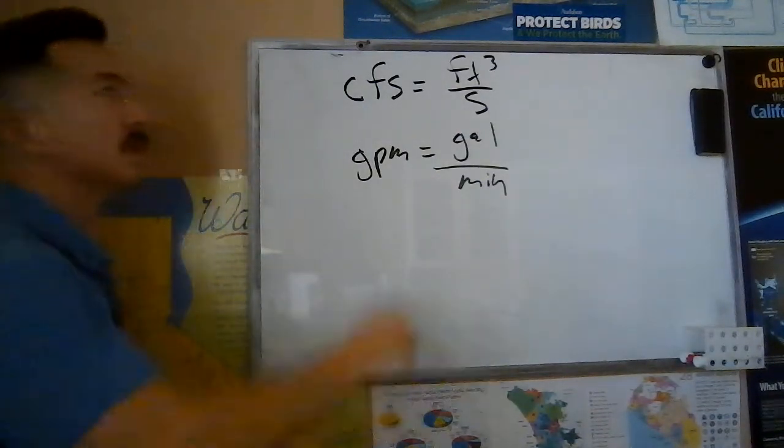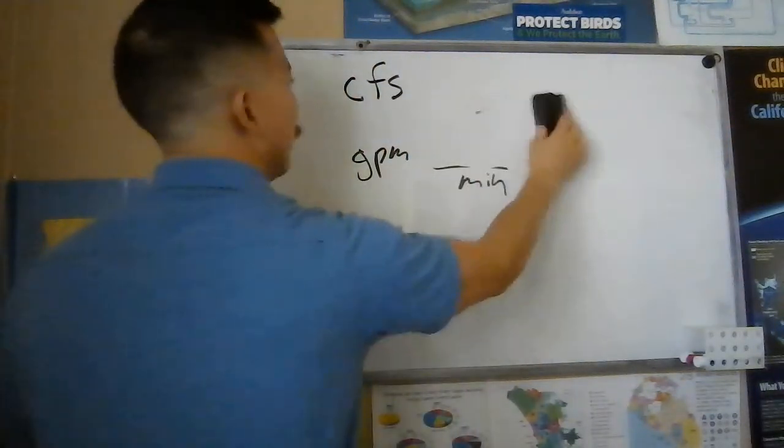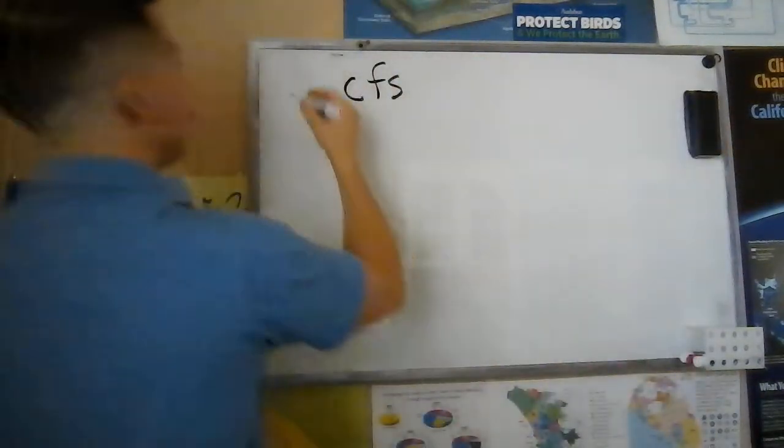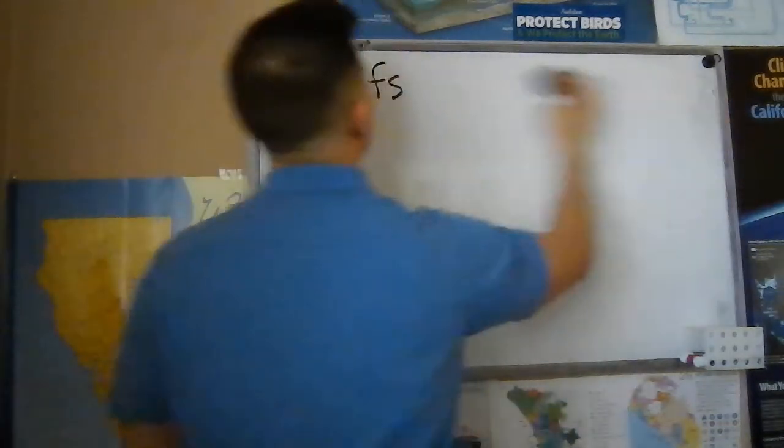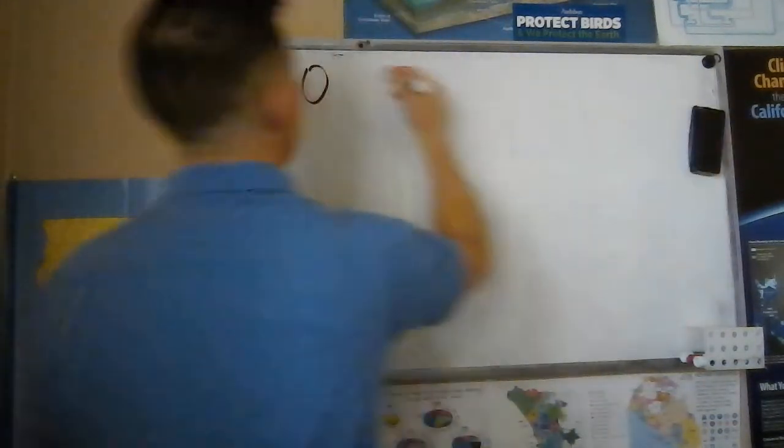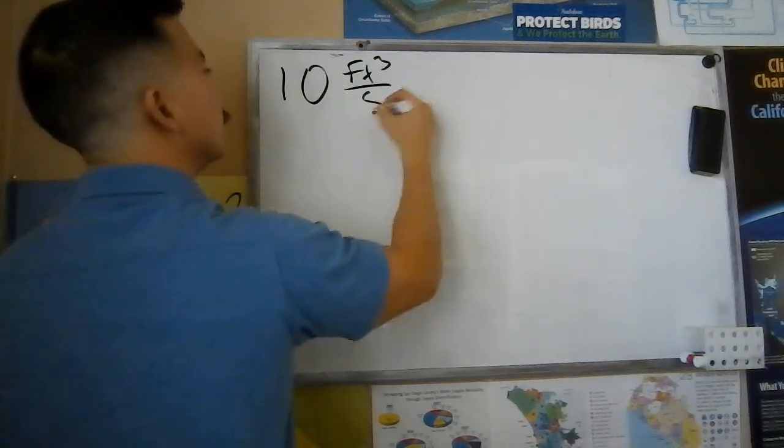So just keep that in mind. Let's start with CFS and convert to GPM. Now let's just start with something simple. Let's say 10 cubic feet per second. We know we want to rewrite that out as a fraction right away. So 10 cubic feet per second.